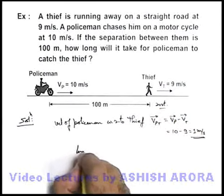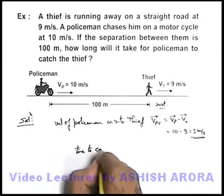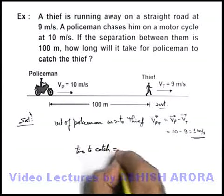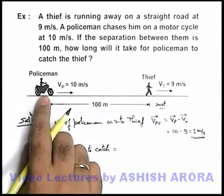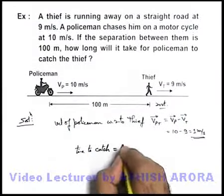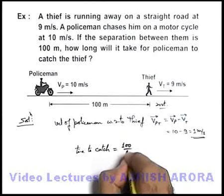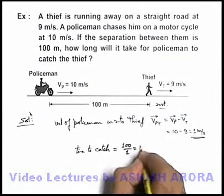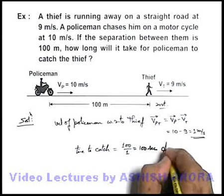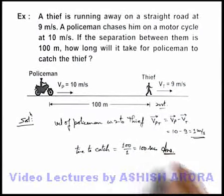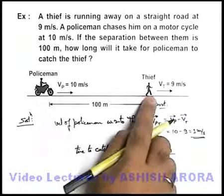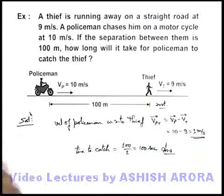Then directly we can calculate the time to catch. Time taken to catch can be simply written as distance upon velocity, so this will be 100 divided by 1, which equals 100 seconds. This is the answer — the time after which the policeman will be able to catch the thief.